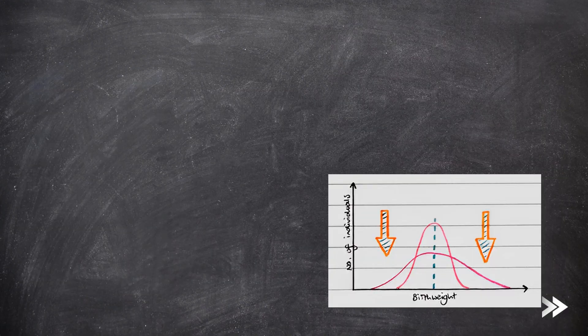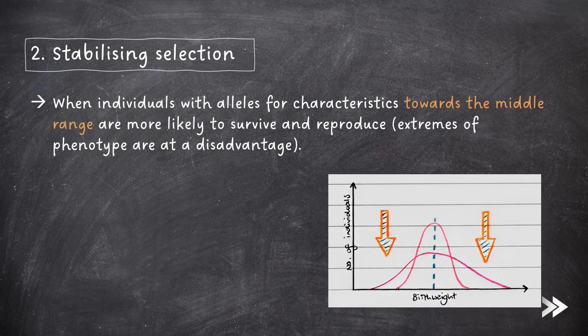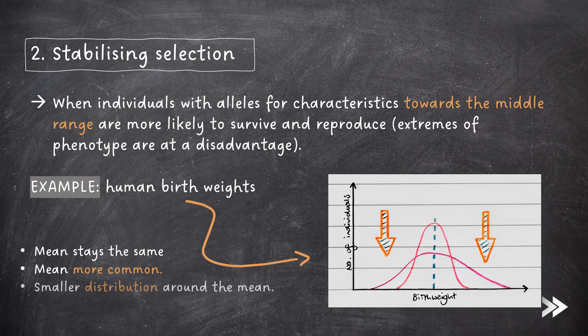Finally, we also have stabilising selection. This is when individuals with alleles for characteristics towards the middle range are more likely to survive and reproduce. Extremes of phenotype are at a disadvantage. The example mentioned in the specification is human birth weights. In stabilising selection, the mean stays the same, the mean is more common, and there is a smaller distribution about the mean.